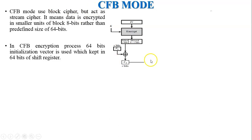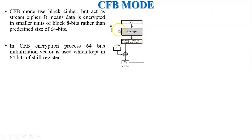Now see in the figure: in the CFB encryption process, a 64-bit initialization vector is used, which is kept in a 64-bit shift register. This is the encryption process for block one. The IV initial vector size is 64 bits. The encryption algorithm is applied, and the second input is key K, so it generates a 64-bit output.